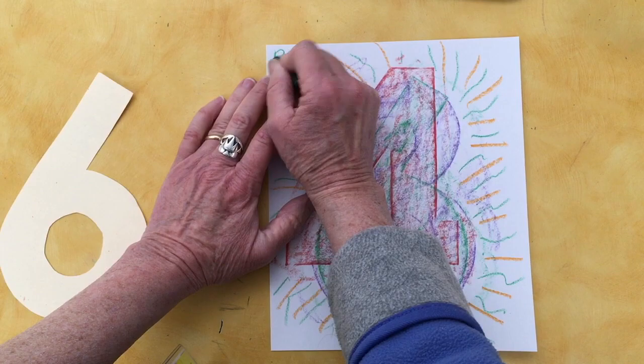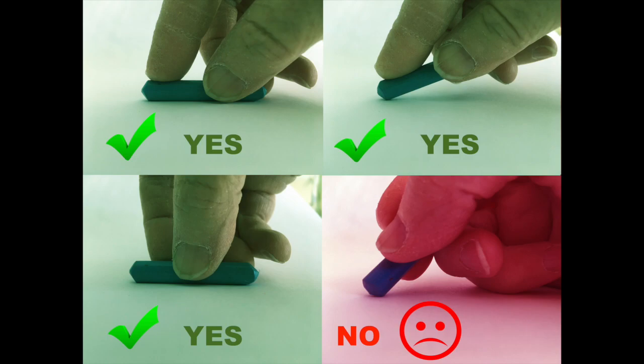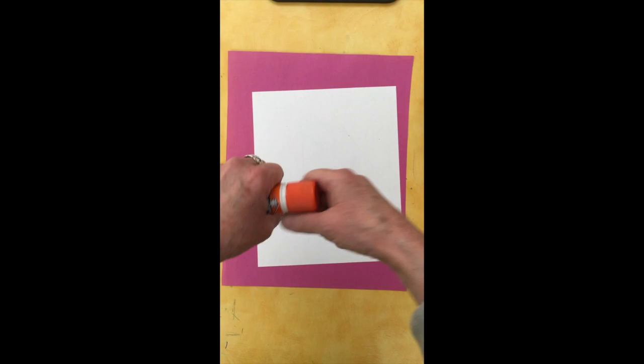Wow, who would have thought that three numbers could look so exciting. I'm going to put my name in the corner. If there's time we can mat our beautiful creations. That is, put them on a colorful piece of paper.